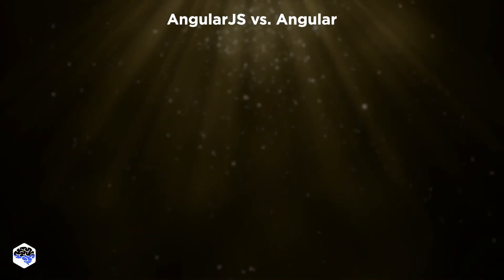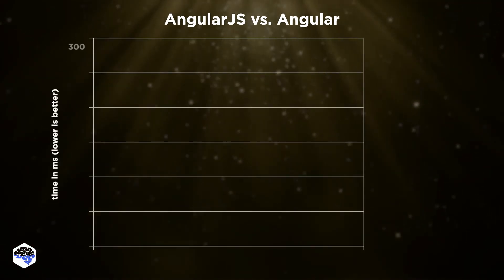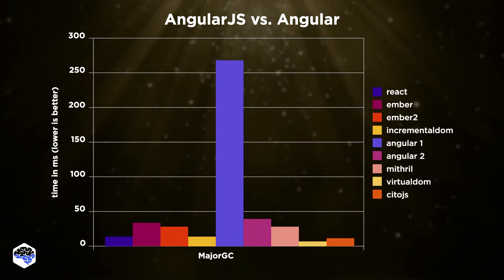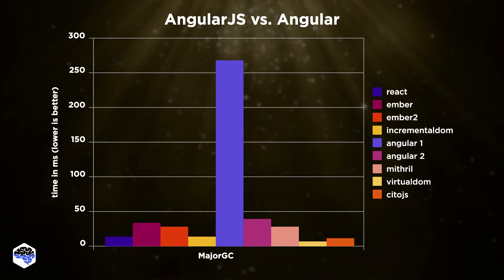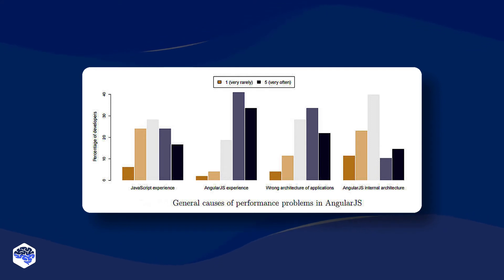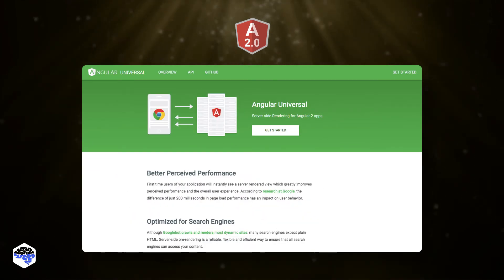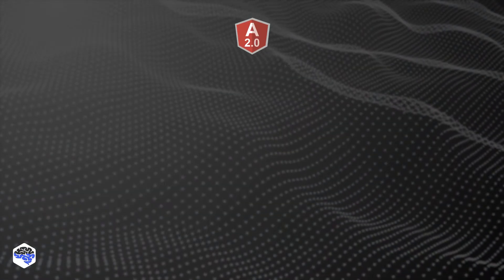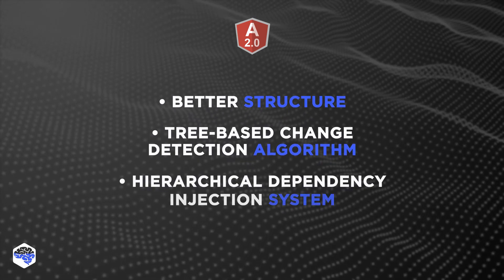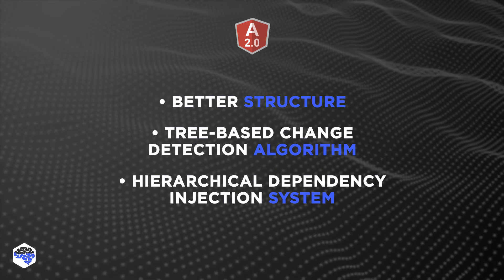Speed — this can easily be a decisive difference for many developers. Low performance is one of the main cons AngularJS is criticized for. When the original development team worked on Angular 2, they dedicated a lot of effort to solving this issue. Even though two-way binding makes developers' lives easier, it makes the client browser process a lot of data, slowing page load down. Angular 2 optimized the whole process, and with Angular Universal you can decrease the processing on the client side. Angular 2 has improved performance due to a better structure, a tree-based change detection algorithm, and a hierarchical dependency injection system.